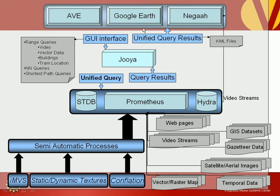Based on the different graphical user interface using the spatio-temporal database engine, GeoDeck takes the query from the user interface and translates it to the standard query language understandable by the spatio-temporal database engine, and then queries it. Once the results are returned, it customizes the results and sends them in a format understandable to that specific user interface that requested the data.